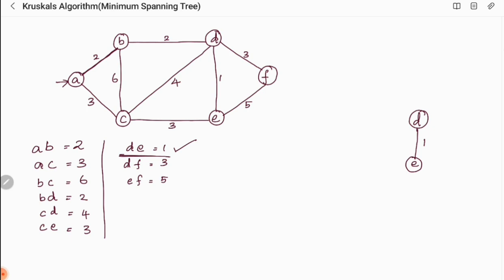Next we consider the next minimum weight. This is AB with cost 2 and BD with cost 2. I am going to draw A and B with weight 2, and next we have BD with weight 2.